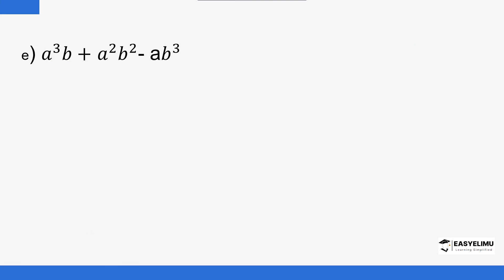This next one has powers, so it's a little more tricky. You start by checking common coefficients — in this case there are none other than 1, so we ignore that. Then move to the first letter after the coefficient, which is 'a'. The powers present are 3, 2, and 1, so the one common to all is a to the power 1. Then for 'b', the powers are 1, 2, and 3 — you go for the lowest power, which is b to the power 1.